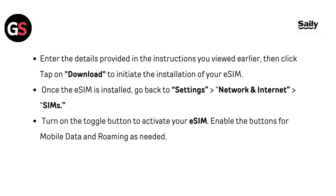Once the eSIM is installed, go back to Settings, then Network and Internet, then SIMs. Turn on the toggle button to activate your eSIM. Enable the buttons for mobile data and roaming as needed.